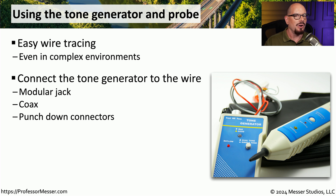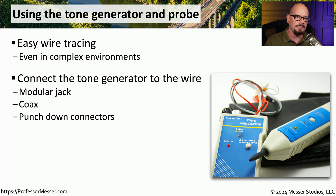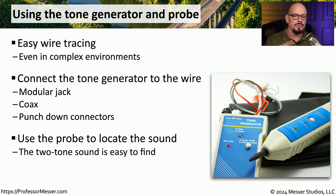You would connect the tone generator on one end of the wire. This can be connected through a modular jack, coax connections, or you might even punch it down into a punch-down block. There could also be alligator clips so you can manually connect it to a piece of copper. You would then use the probe to locate where that might be in that large grouping of cables, and eventually, when you come across the tone, you know you've found the right cable.